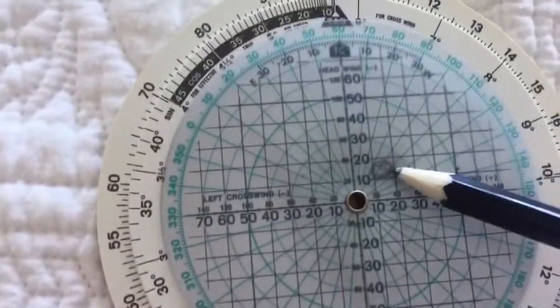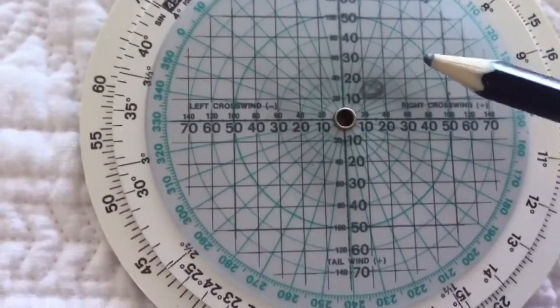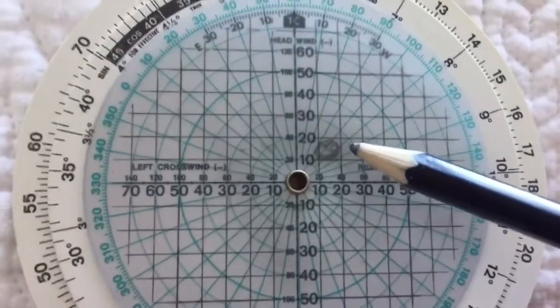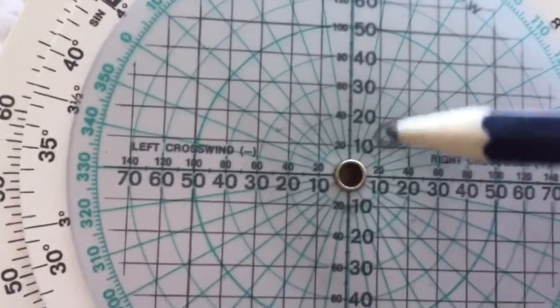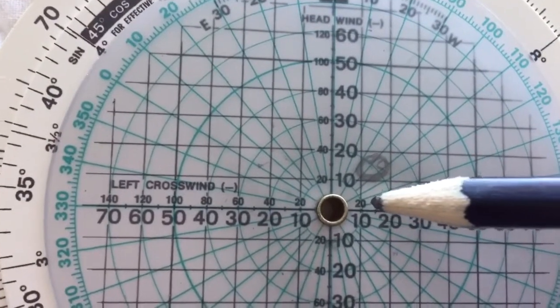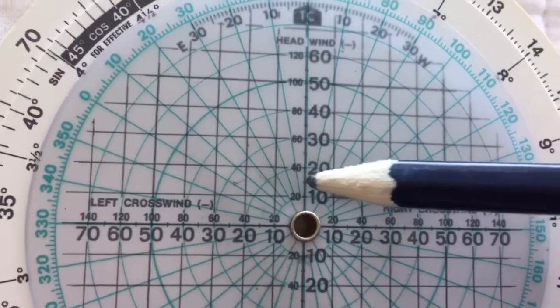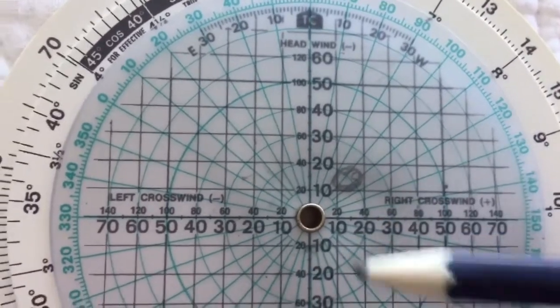You'll now see that our dot has moved around to the right, and what that means is we now have a wind coming from our right hand side. We can read on this scale here how strong the crosswind is, and on this scale here how strong the headwind is.